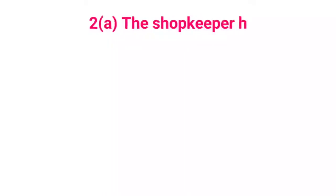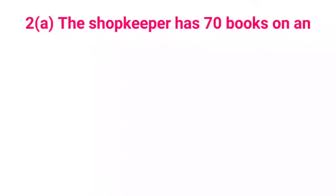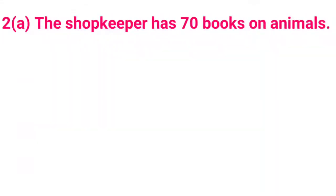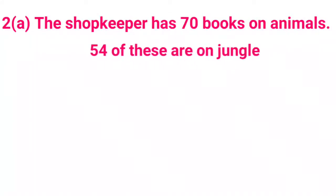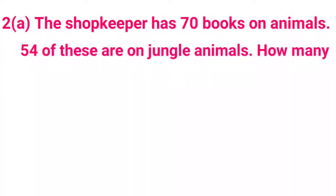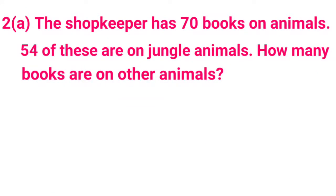Second question, part a. The shopkeeper has 70 books on animals. 54 of these are jungle animals. How many books are on other animals? The shopkeeper's total books are 70 books, and 54 of these are jungle animal books.